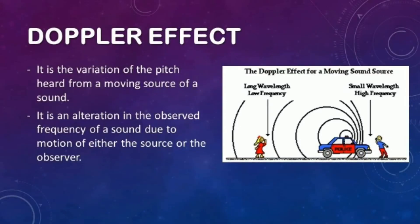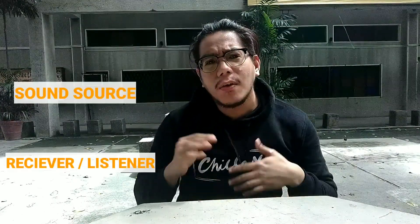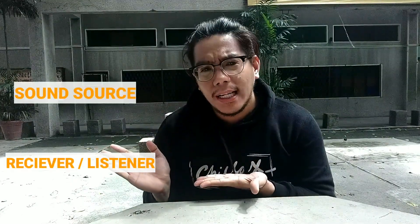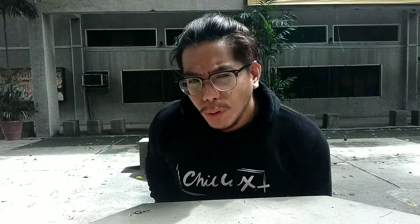Bago tayo magsimula, alamin muna natin kung anong ibig sabihin ng Doppler Effect. Pag sinabi nating Doppler Effect, it has something to do with sound — meron tayong receiver or listener and the source of the sound. By the way guys, ang nakaisip pala ng concept na ito ay isang Australian scientist noong 1842. Ang pangalan niya pala ay Christian Johann Doppler.